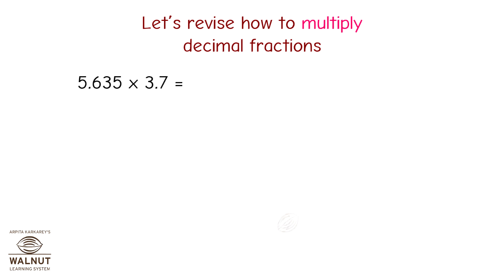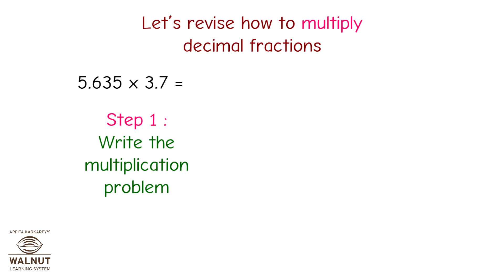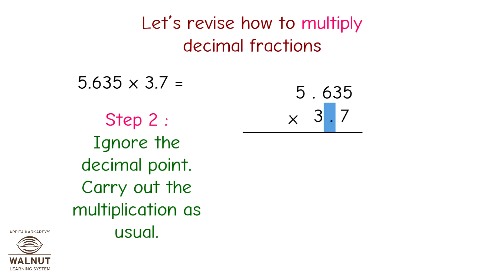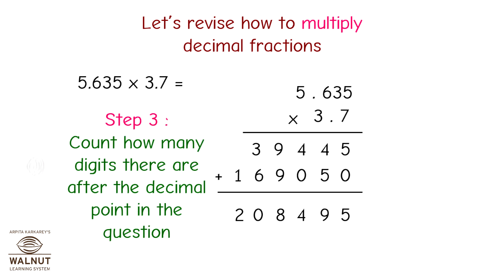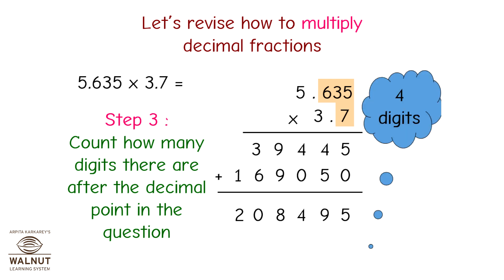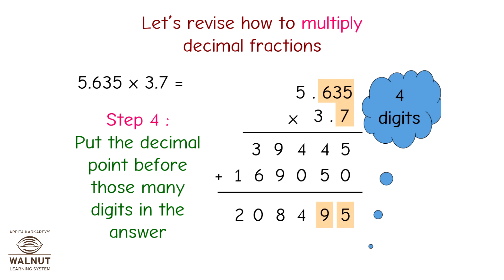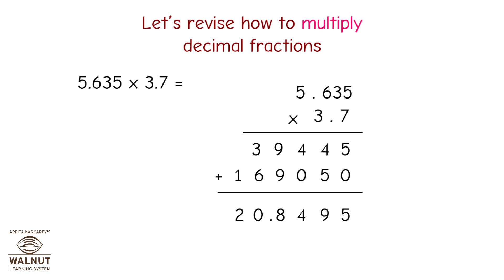Let's revise how to multiply decimal fractions. 5.635 multiplied by 3.7. Step 1: Write the multiplication problem. Step 2: Ignore the decimal point and carry out the multiplication as usual. Step 3: Count how many digits there are after the decimal point in the question — 4 digits. Step 4: Put the decimal point before those many digits in the answer. Therefore, 5.635 multiplied by 3.7 is equal to 20.8495.